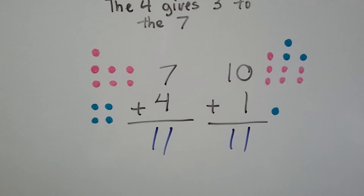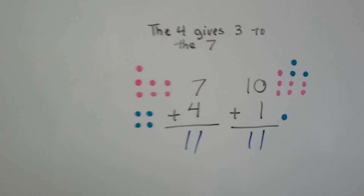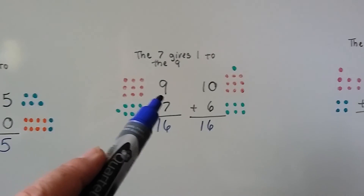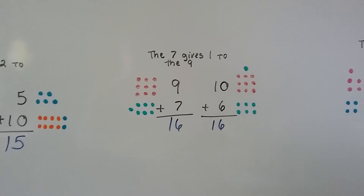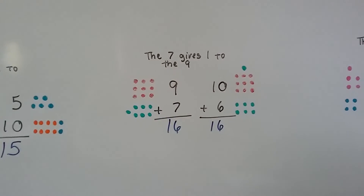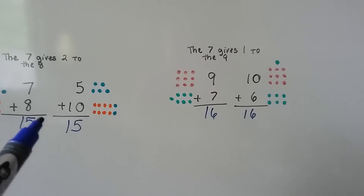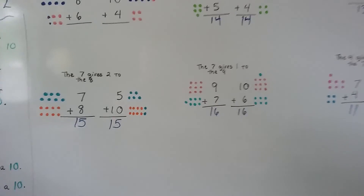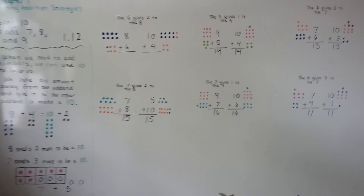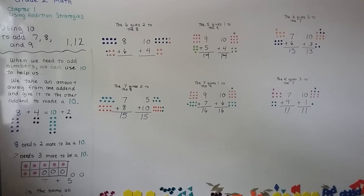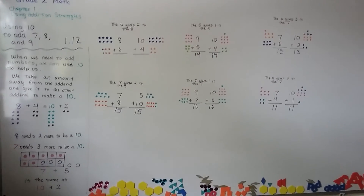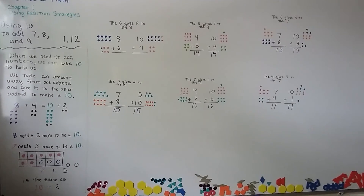So we can take numbers away from the other addend to make the first addend a 10, to make adding easier. It works especially well with 9s because you just need one more and you make it one less, but we can use it with 8 and with 7 as well. That's how we can use 10 to add a 7, an 8, or a 9 — you can try it yourself.